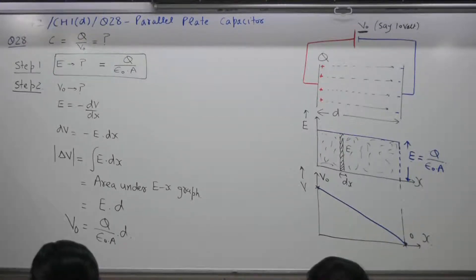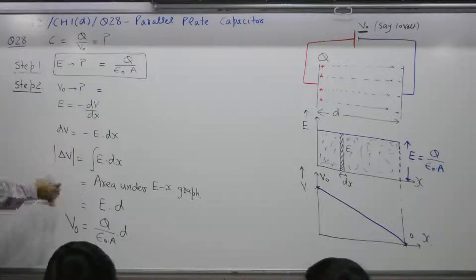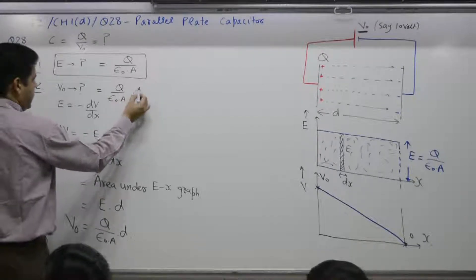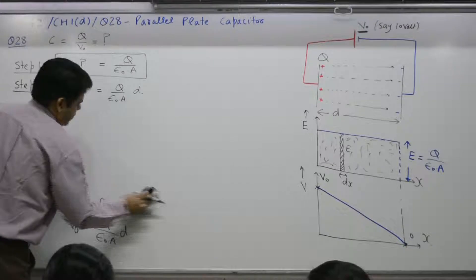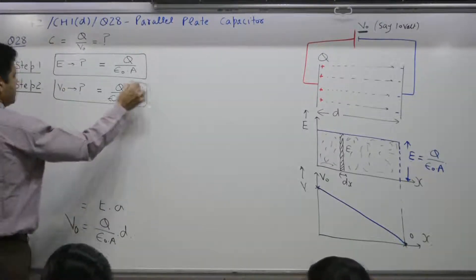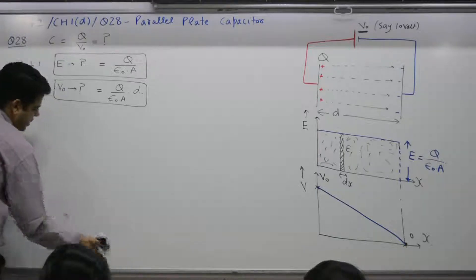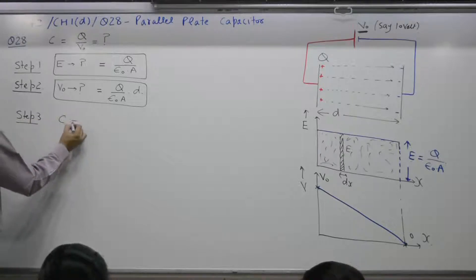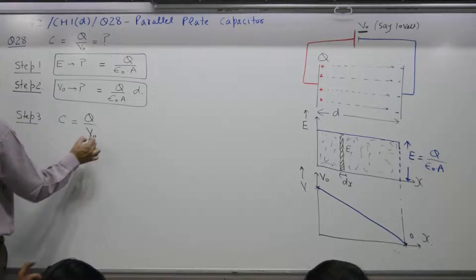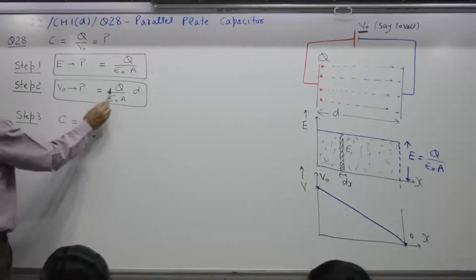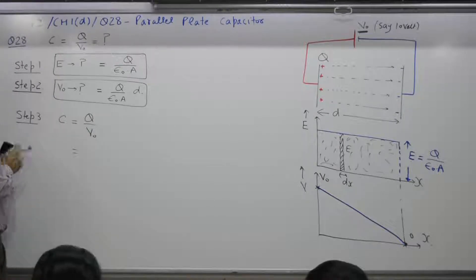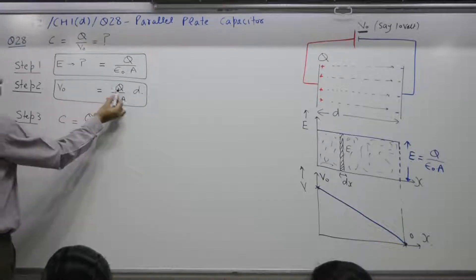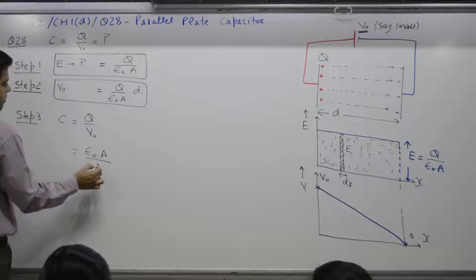Step 3: find the capacitance. In all these questions, step one is to find E, step two is to find V, step three is to find capacitance. Capacitance equals charge divided by V naught. From step two, V naught equals Q d divided by epsilon A. So Q divided by V naught equals epsilon A divided by d.